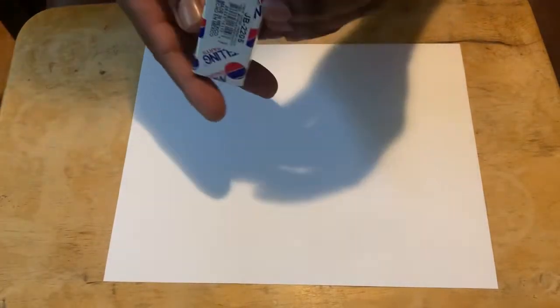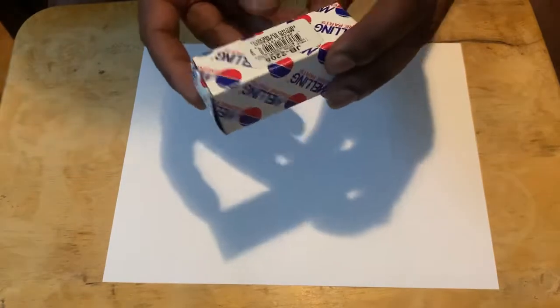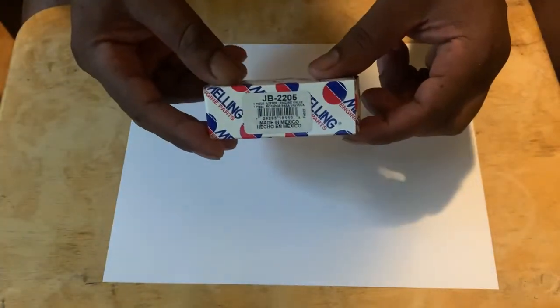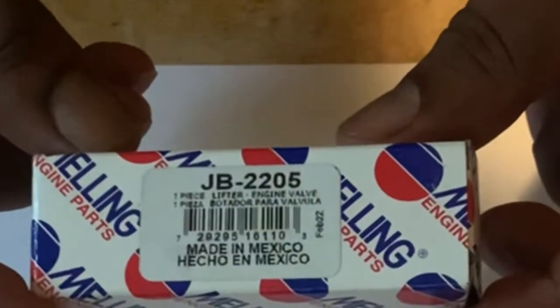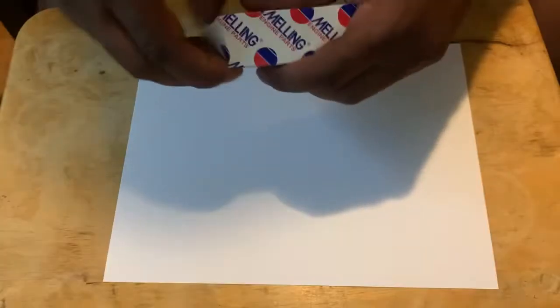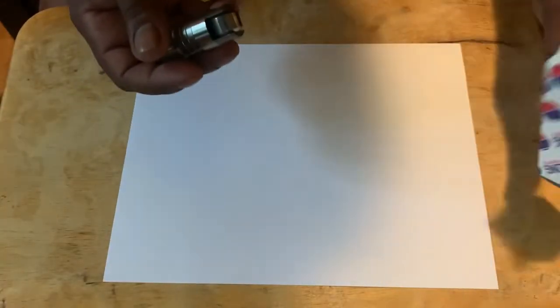All right, let's see how fast we can do this. This is a Melling 302 part number—I might have to flip it around so you can see that. JB 2206 hydraulic lifter for a Ford 302.